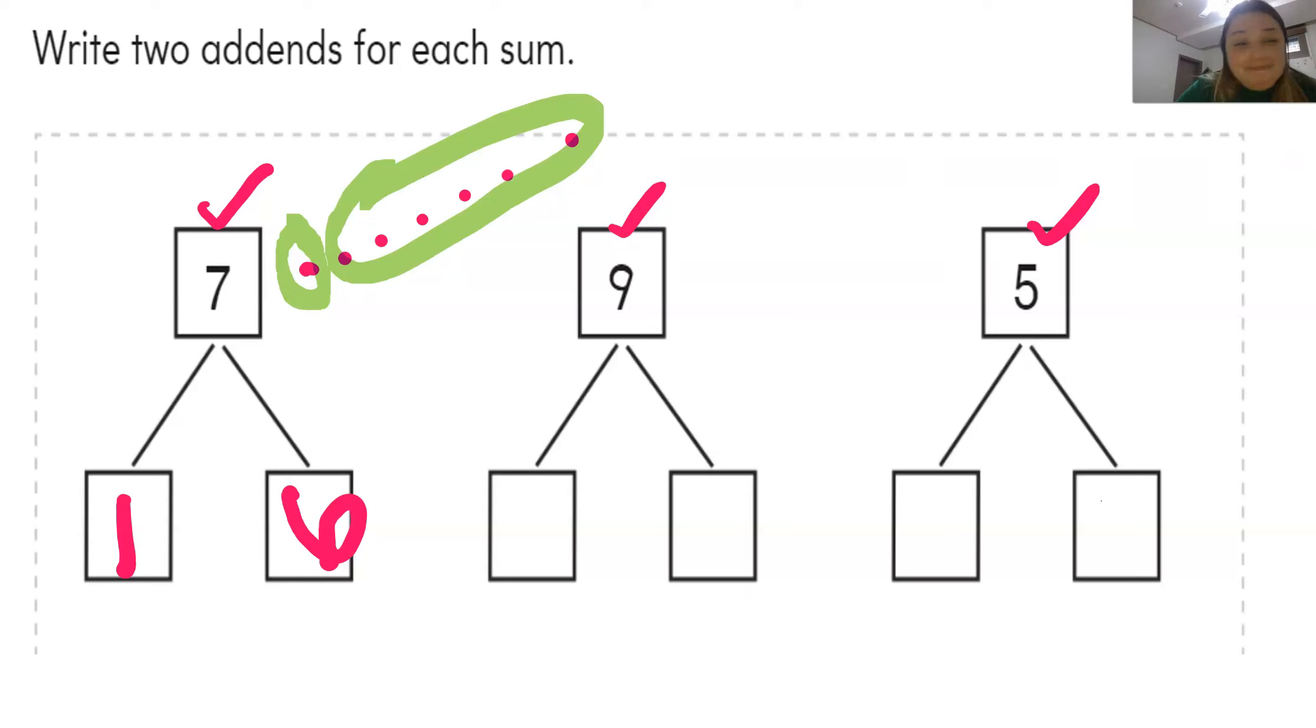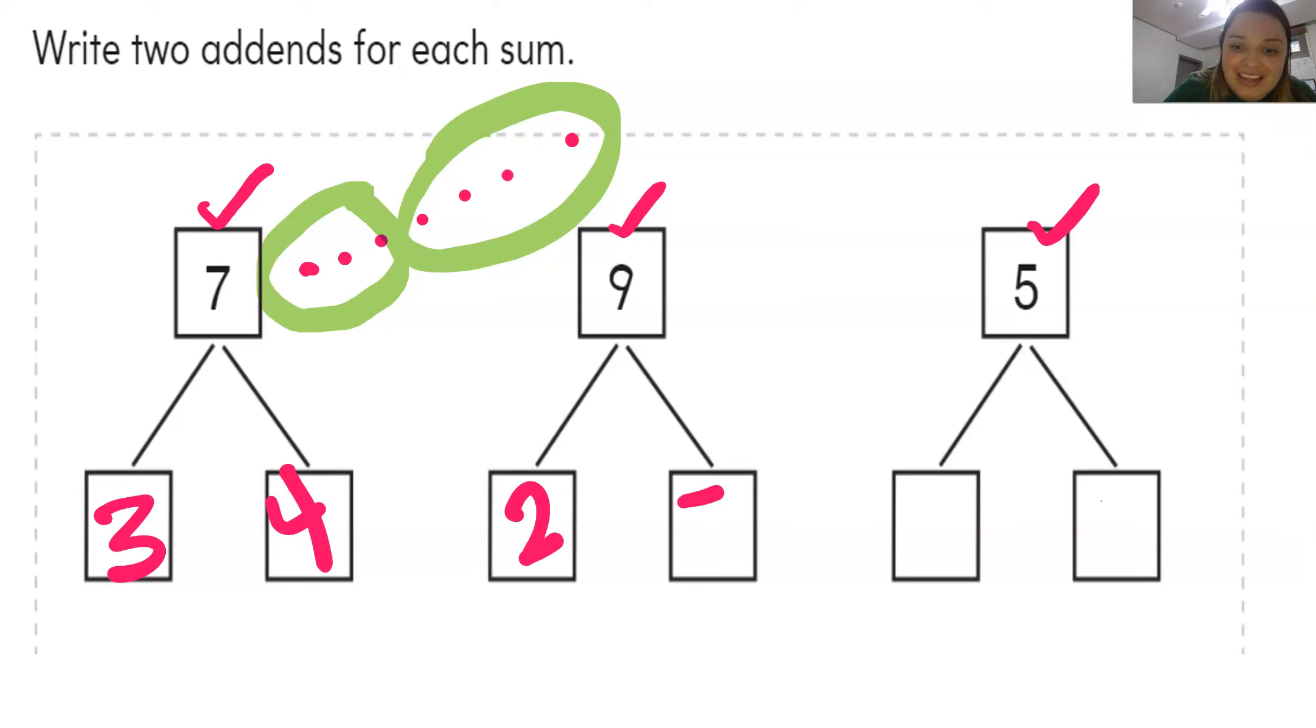Is that the only way that we can break apart the 7? It is not. We can break it up into 2 and 5. That's not the only way. There's another way. We can do 3 and 4. That's how we can break up the 7. How do we break up the 9? There's different ways that you can break up the 9. We can do 1 and 8. Easy peasy, lemon squeezy. Or we can do 2 and 7. Is that all? We can do 3 and 6. So there's different ways in which we can break up a number. Do you remember now?